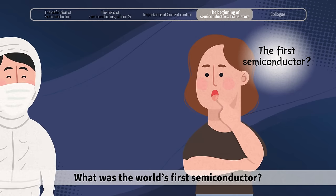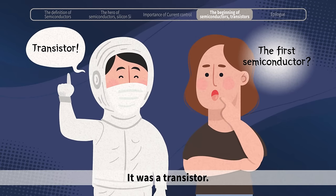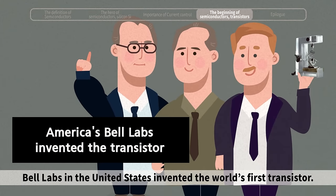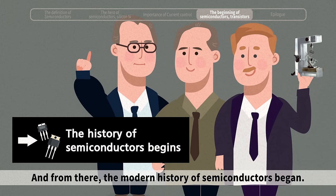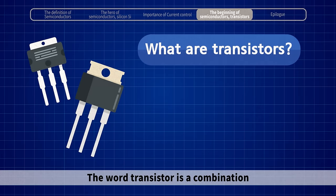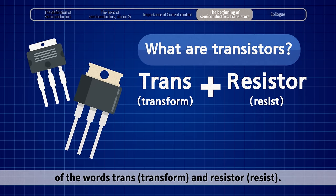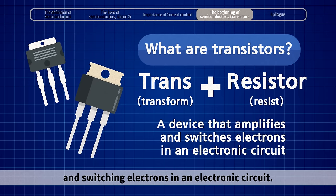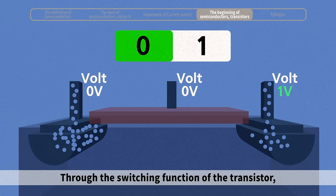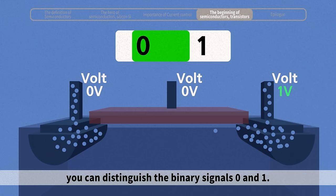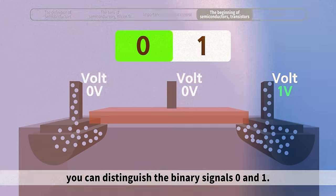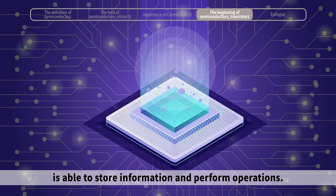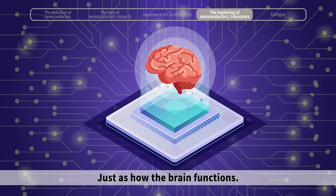What was the world's first semiconductor? It was a transistor. In 1947, Bell Labs in the United States invented the world's first transistor, and from there the modern history of semiconductors began. The word transistor is a combination of the words 'trans' and 'resistor.' It's the part in charge of amplifying and switching electrons in an electronic circuit. Through the switching function of the transistor, you can distinguish the binary signals 0 and 1. A semiconductor chip, which is the assembly of countless transistors, is able to store information and perform operations, just as how the brain functions.